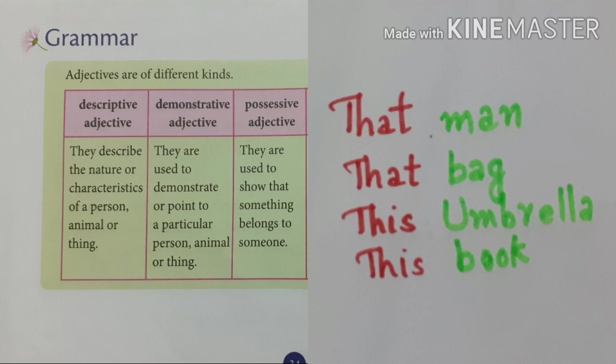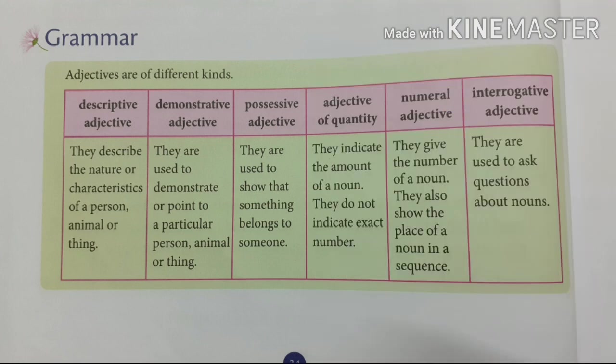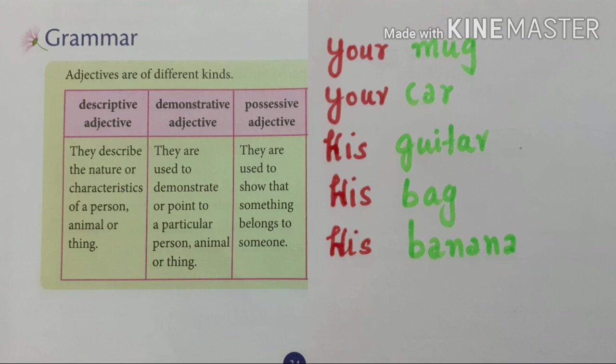What is a possessive adjective? Possessive — they are used to show that something belongs to someone. For example: your mug, your car, his guitar, his bag, his banana. These are called possessive adjectives.